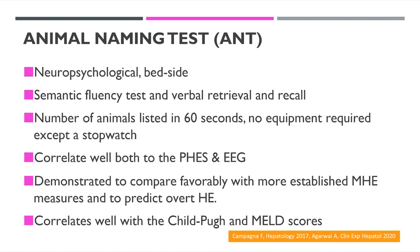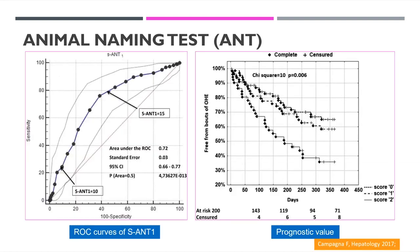The Animal Naming Test is the simplest point-of-care test — ask the patient to name as many animals as possible within 60 seconds. It requires no equipment except a stopwatch. It correlates well with the gold standard PHES and EEG, and predicts overt HE. Scores are divided: zero (normal) is more than 15 animals, one is between 10 and 15, and two (positive/abnormal) is less than 10. Score two performance links to development of overt HE.